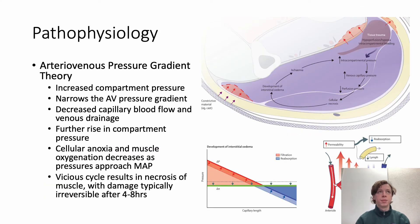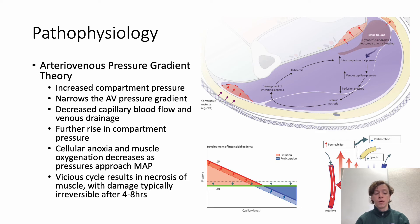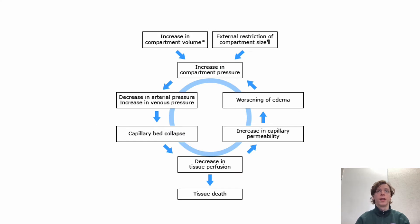The arteriovenous pressure gradient theory is the most widely accepted explanation for ACS. Increased compartment pressure, usually following trauma, narrows the AV pressure gradient between arterial and venous pressure, resulting in decreased capillary blood flow and venous drainage. This contributes to a further rise in compartment pressure, leading to cellular anoxia and decreased muscle oxygenation as pressures approach mean arterial pressure. This vicious positive feedback cycle results in muscle necrosis, and the damage is typically irreversible within four to eight hours — making ACS a true emergency.